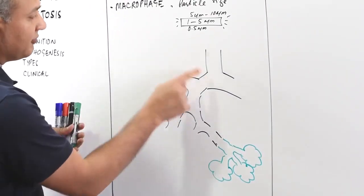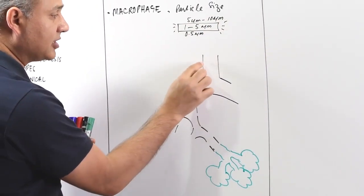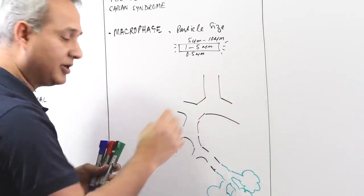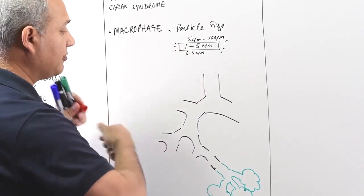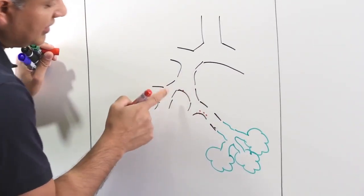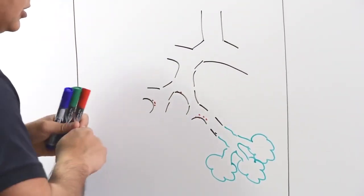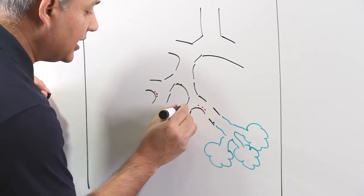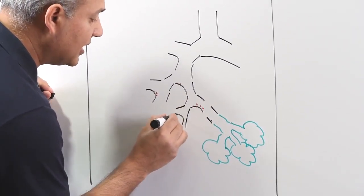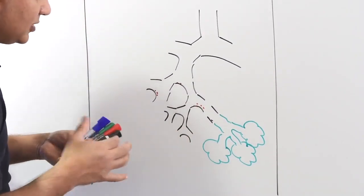So the 0.5 micrometer can go all the way and go back up. 5 micrometer to 10 micrometer will get trapped in the upper areas. This is the 1 to 5 micrometer. These guys are going to go in and usually they get trapped at the bifurcations of the relatively smaller airways. Bifurcation is where they are dividing.